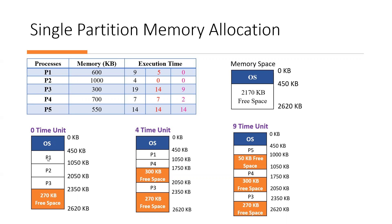In order of memory allocation: Process 1 requires 600 KB. When memory is allocated to P1, it starts from 450 KB onward, so it goes from 450 to 1050 KB. Process 2 requires 1000 KB, allocated from 1050 to 2050 KB. Process 3 requires 300 KB, allocated from 2050 to 2350 KB. P4 and P5 have not yet been allocated. At time zero, P1, P2, and P3 have already been allocated memory, so their execution also starts.